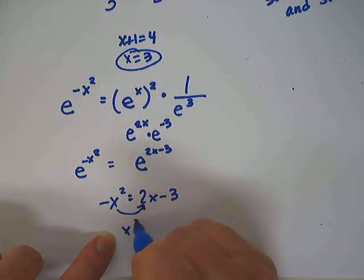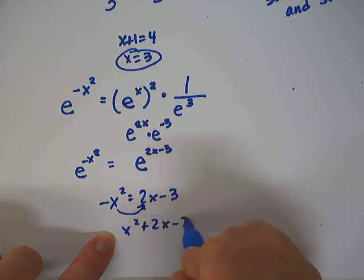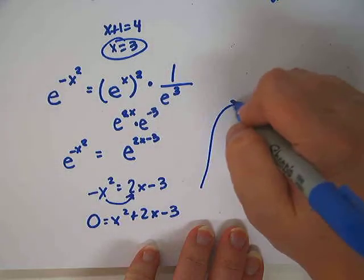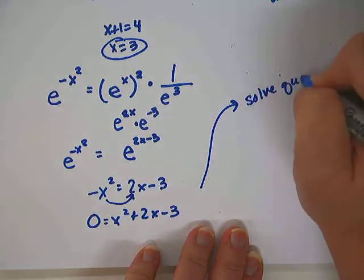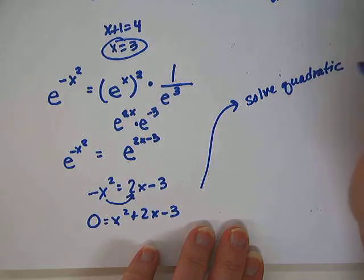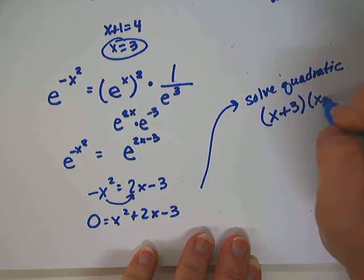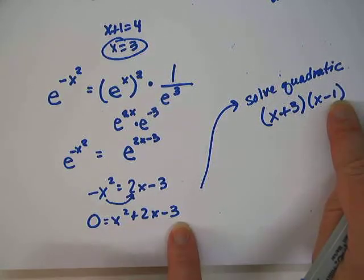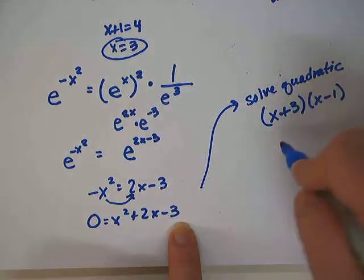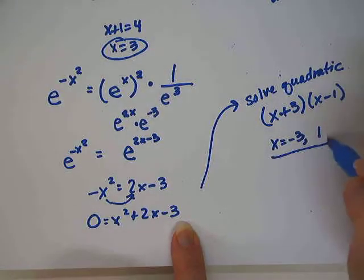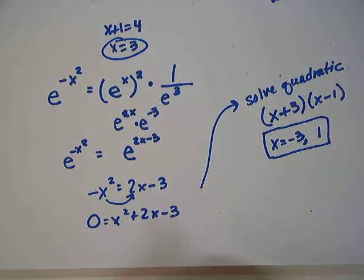So we have negative x squared equals 2x minus 3. We can now add this to the other side, so that we have a positive x squared plus 2x minus 3. Of course that gave us 0 over here, so now we have a quadratic we're solving. I hope you remember how to solve quadratics. So we're going to solve our quadratic by factoring or by quadratic formula. Let's see if this one will factor. x plus 3 and x minus 1 I believe does the trick, right? Because 3 times negative 1 is negative 3, and 3 plus a negative 1 is a positive 2. So that gives me answers negative 3 and positive 1. And there I've solved it.